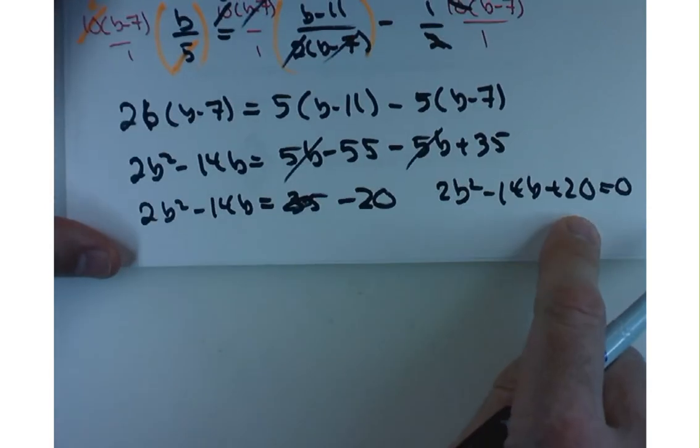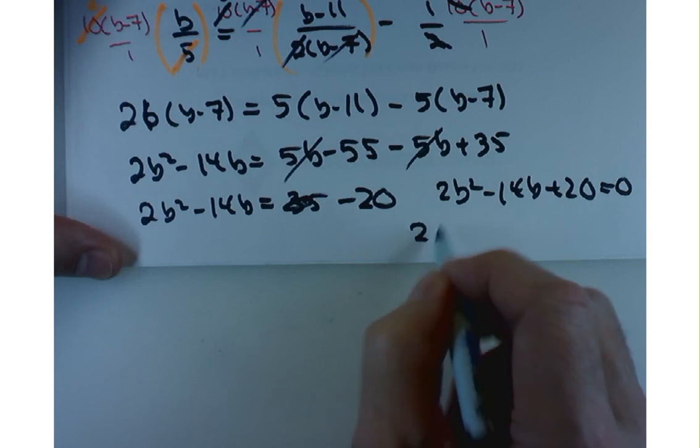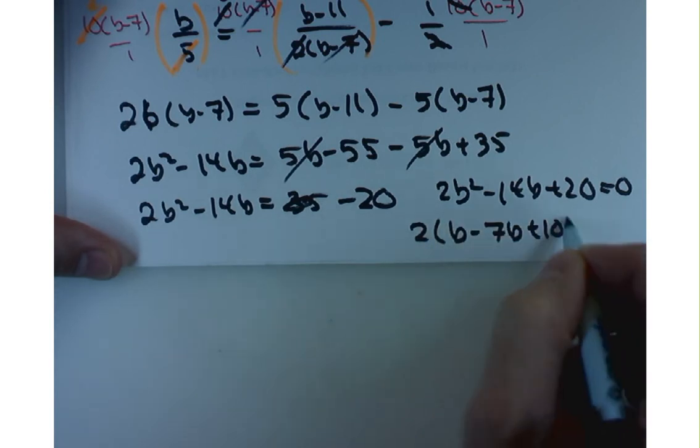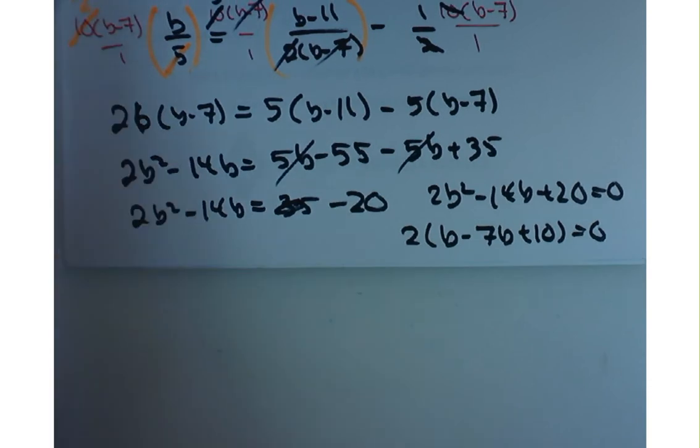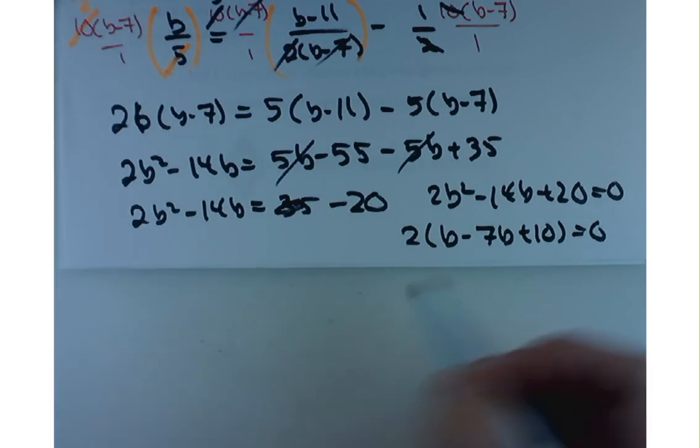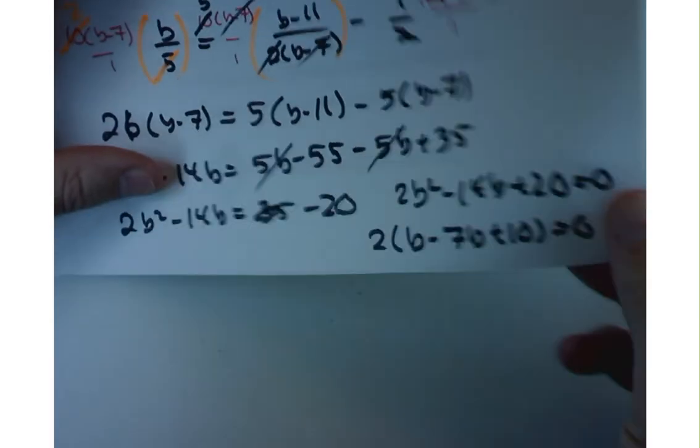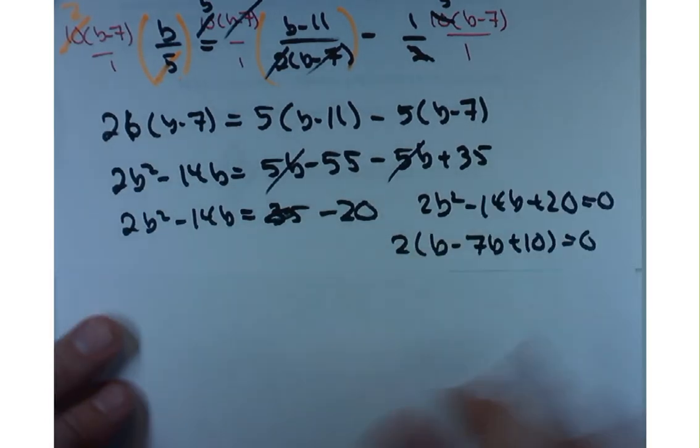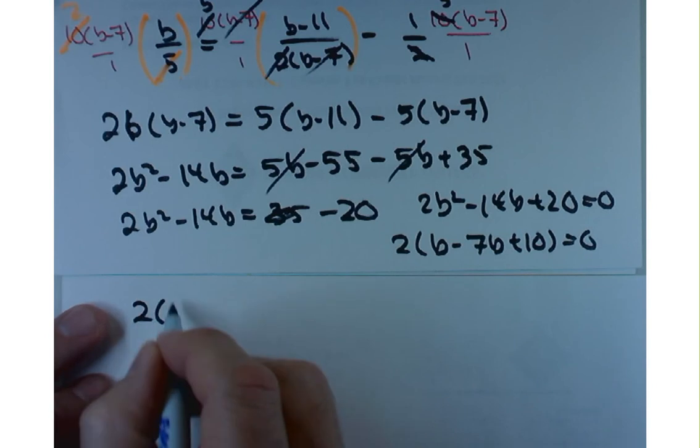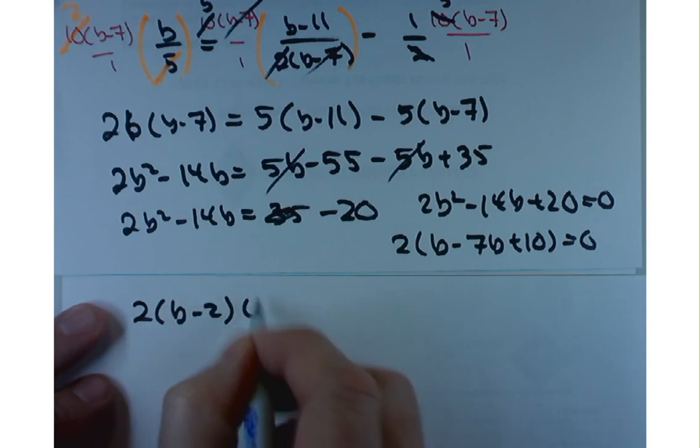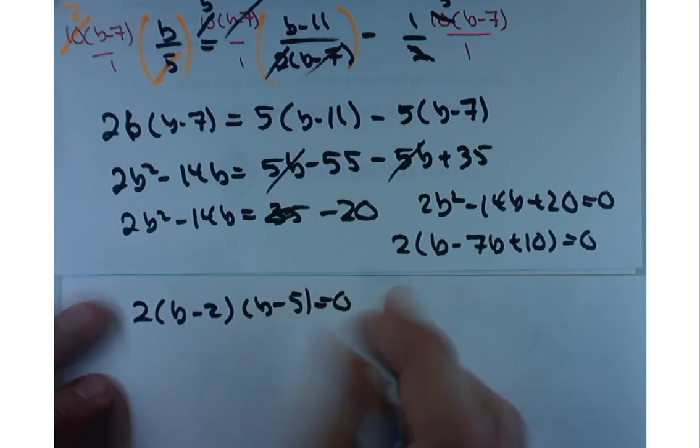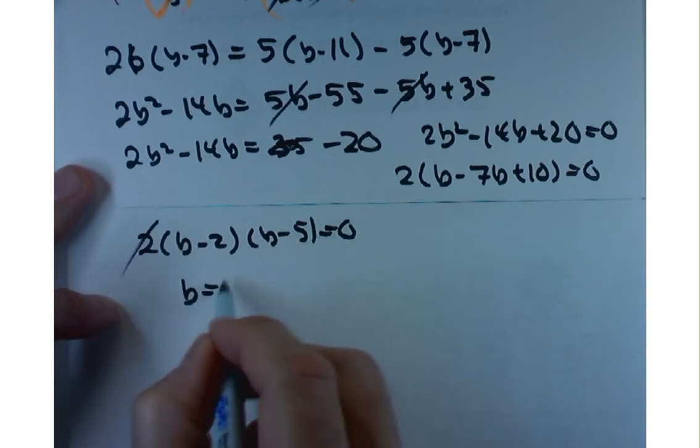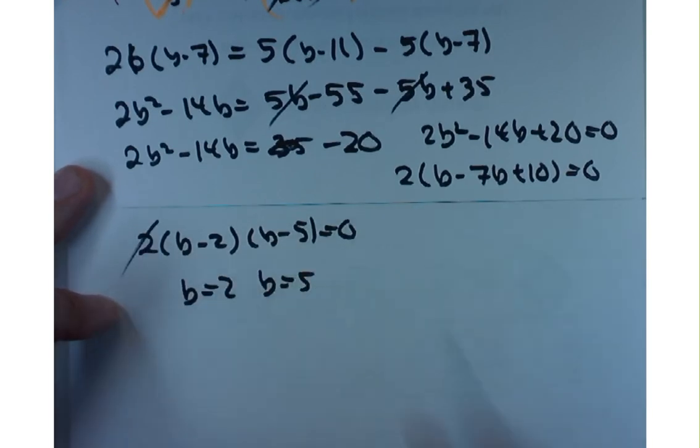In terms of factoring this, I would factor out the 2 first. B minus 7B plus 10 equals 0. So, it's going to be 2 times B minus 2 times B minus 5 equals 0. Ignore that. B equals 2 or B equals 5. Those are your answers.